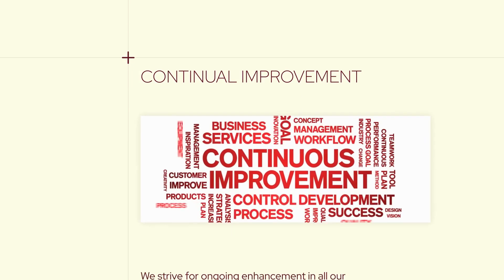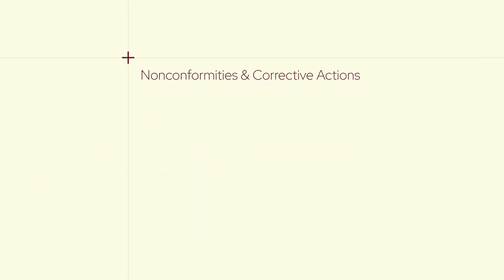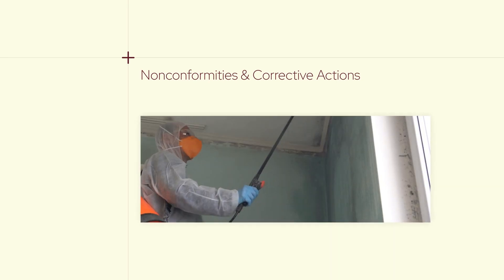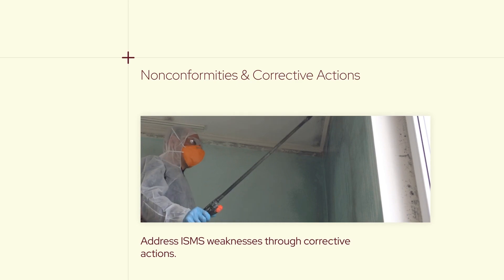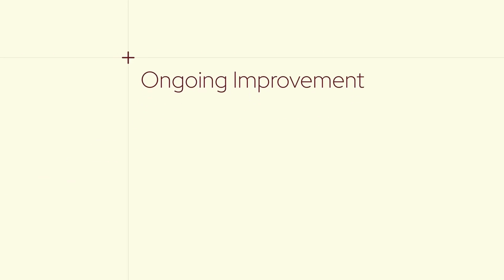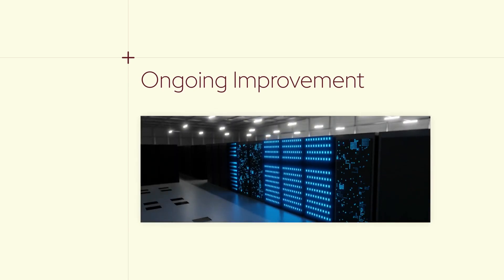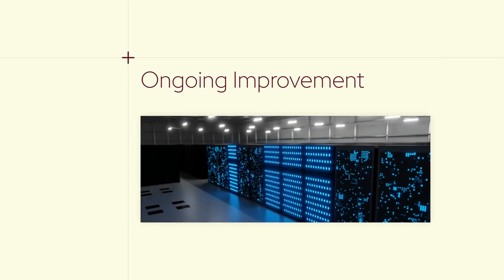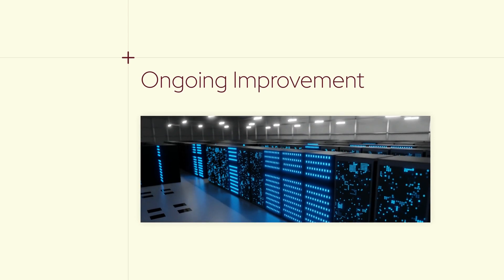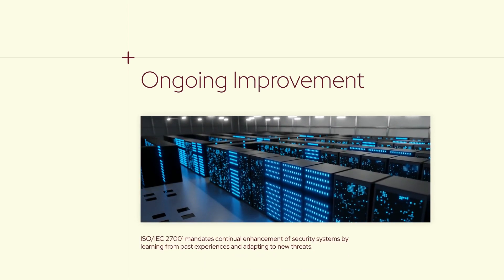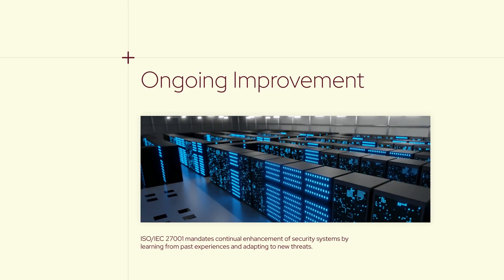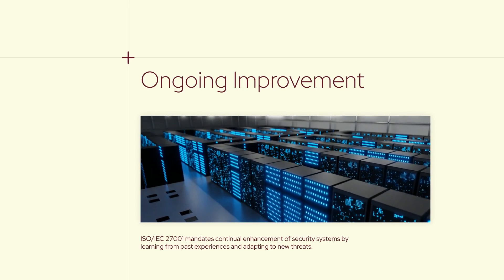Continual Improvement. Any identified weaknesses or failures in the ISMS should be addressed through corrective actions. ISO IEC 27001 requires organizations to continually improve their information security management system by learning from past experiences and evolving security threats.